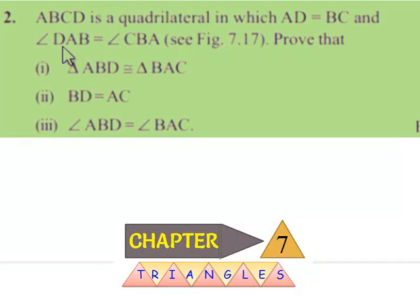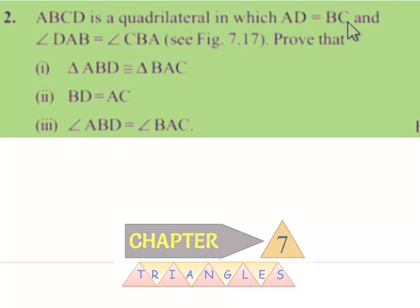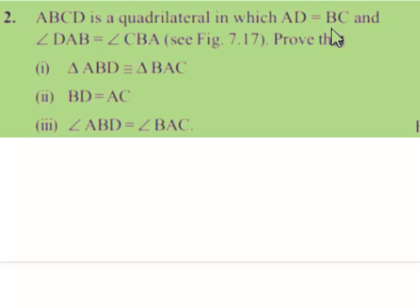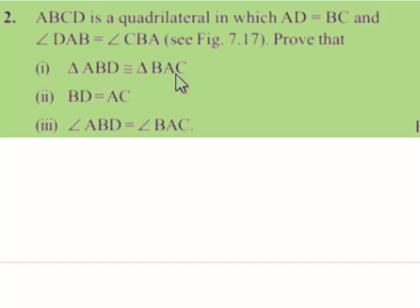Moving on to the second question. ABCD is a quadrilateral in which AD is equal to BC and angle DAB is equal to angle CBA. Prove that triangle ABD is congruent to triangle BAC.